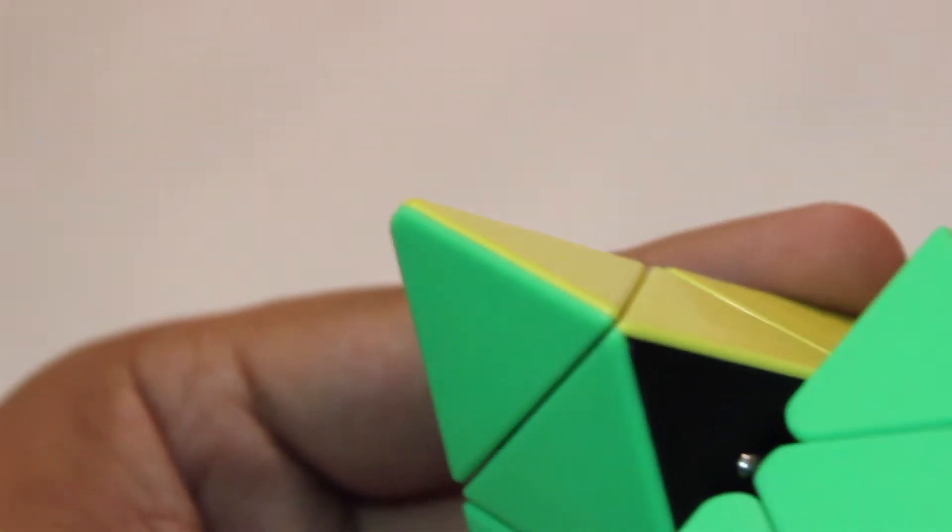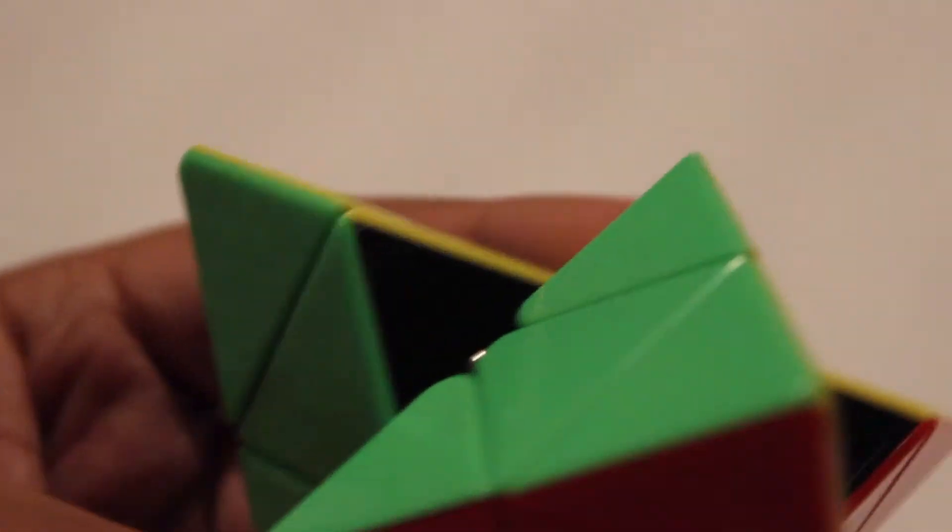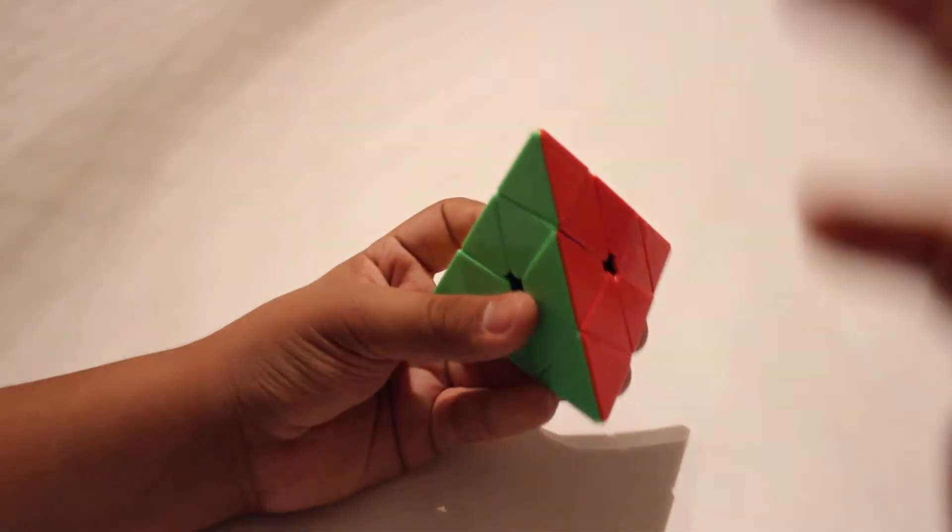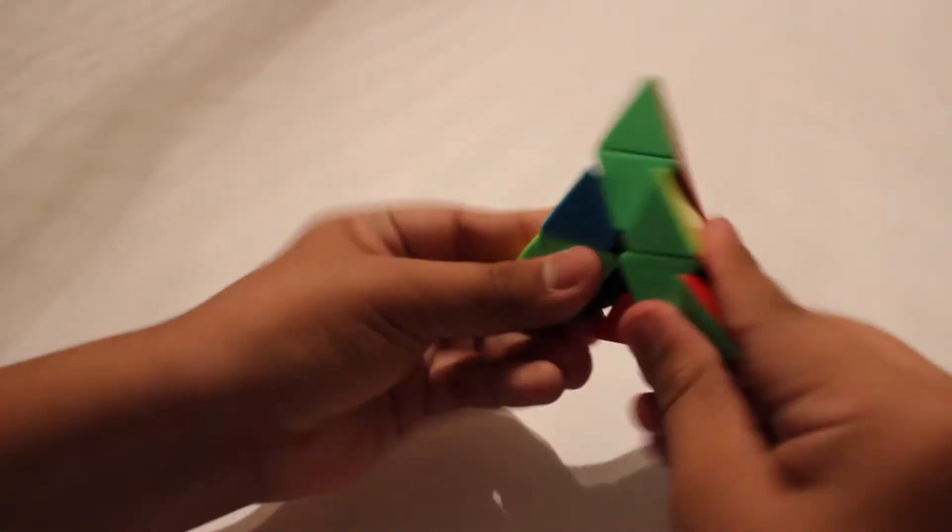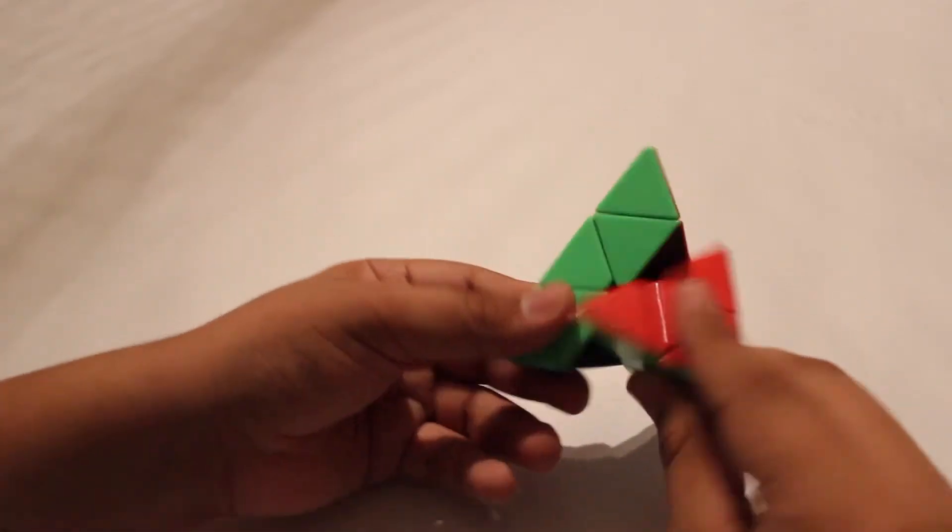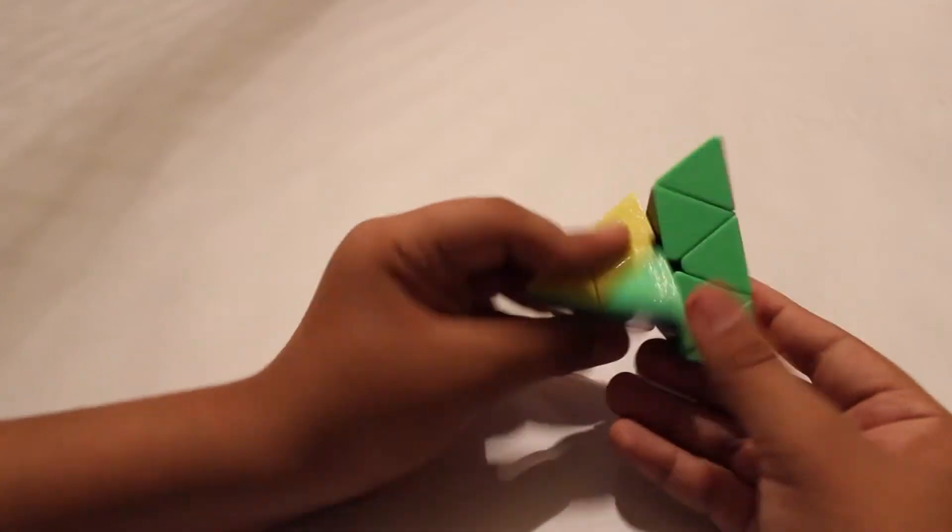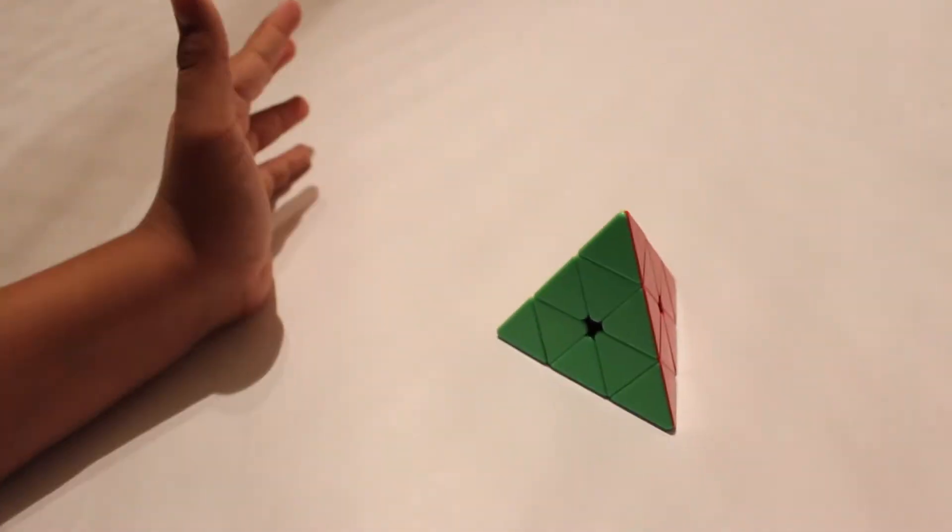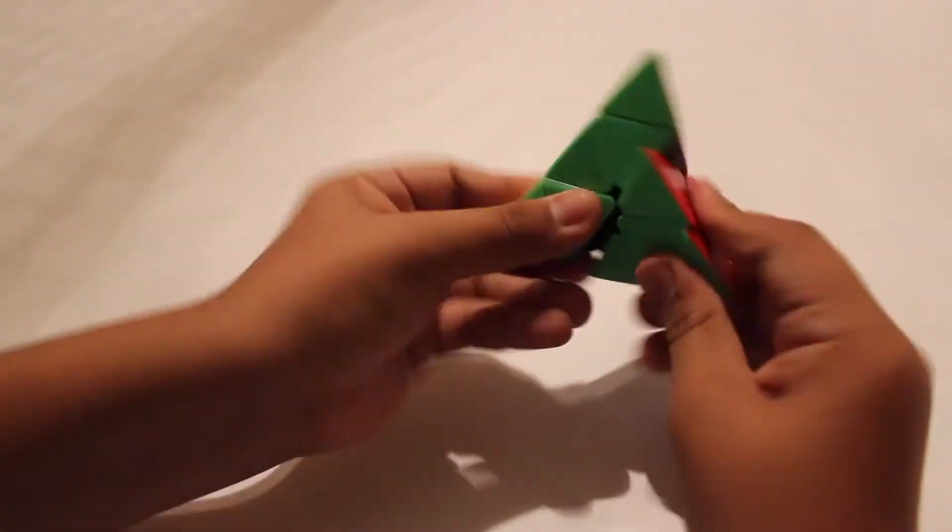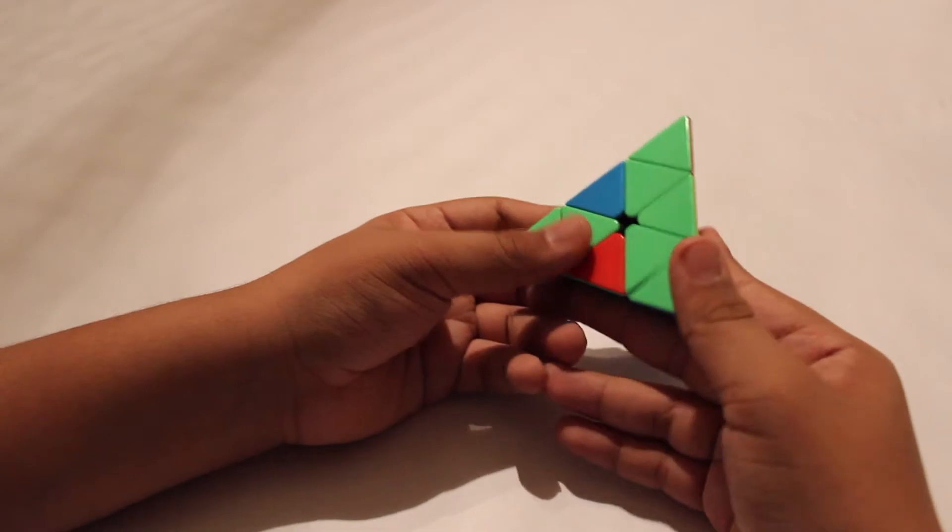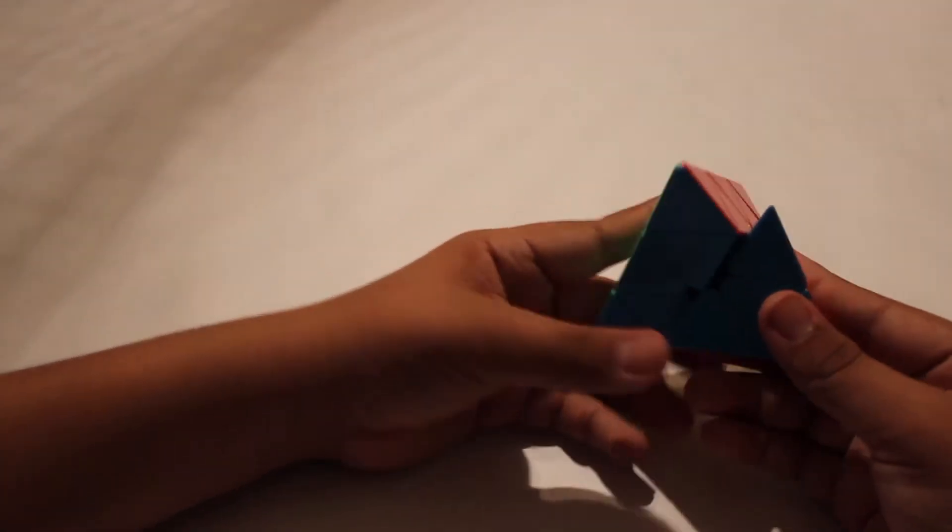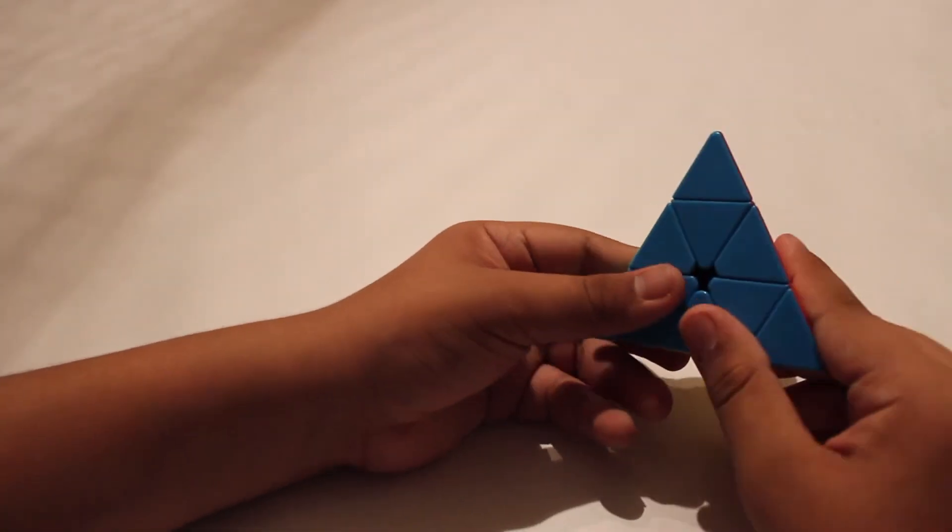As you can see, the Shang Shao Pyraminx uses ball bearings to help click the puzzle into place. You can hear these ball bearings when you are turning the puzzle. They really help the puzzle stay together when you finish an algorithm. It helps the puzzle maintain a stable shape during the solve.